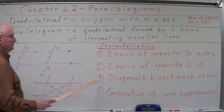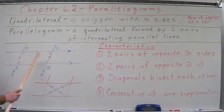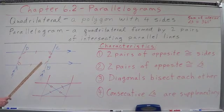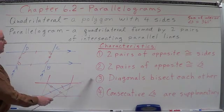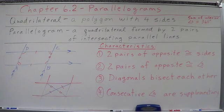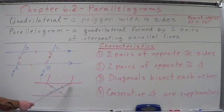Number two: they have two pairs of opposite congruent angles. Angle B is congruent to angle D, and angle A is congruent to angle C — opposite congruent angles. Number three: their diagonals bisect each other. If you cut the diagonals, they bisect each other — this one cuts the other in half, and vice versa.